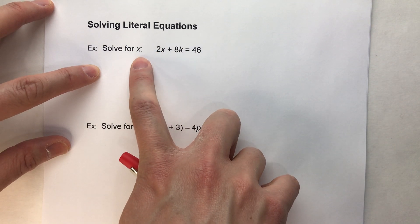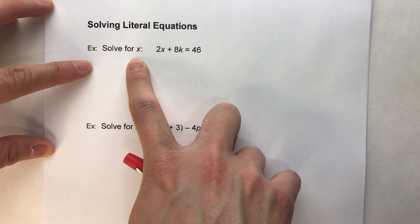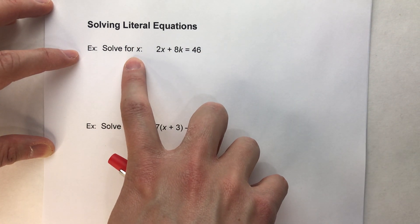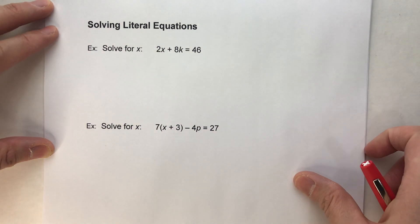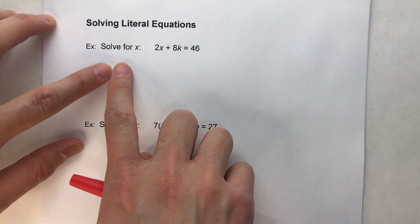So when we solve for x, what we're going to have to do is get x by itself on one side of the equal sign and put everything else on the other side, and our answer for x is going to be a variable expression. So we'll do a few examples so you can see this in action.